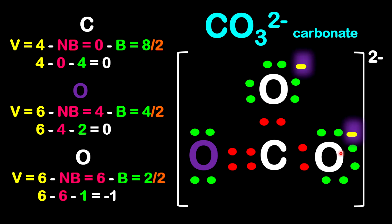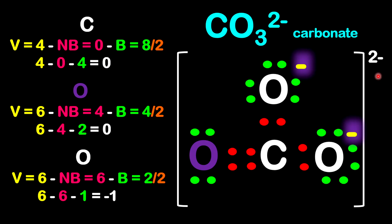Now let's look at the other two oxygen atoms — they are the same. They have the same non-bonding electrons and the same type of bond, which is a single bond between each. The valence electron of oxygen is 6. The non-bonding electrons are going to be 6 around each. The bonding electrons will be 2, so 2 divided by 2. So it's going to be 6 minus 6 minus 1, which equals negative 1 on each. Each of these oxygens has a negative 1 charge, and so it amounts to a total of 2 negative — that's why carbonate is a 2 negative charge.